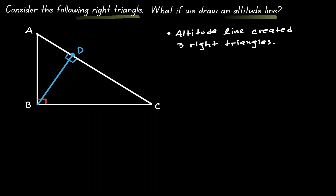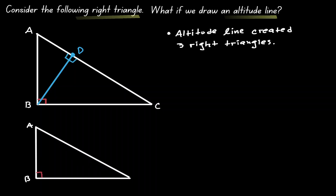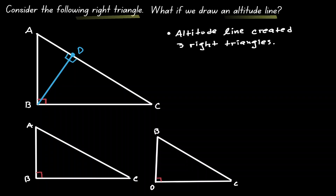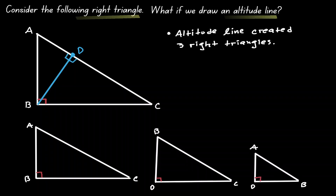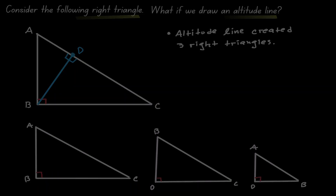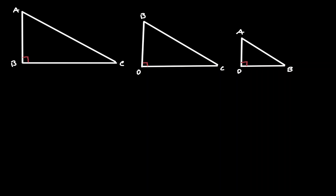Let's draw them separately at the bottom. Let's start with the biggest right triangle ABC. Then let's draw the next smallest right triangle BDC. And then let's draw the smallest right triangle ADB. Now, let's concentrate on the three right triangles that we have drawn. One thing that is special about these triangles is that they are similar right triangles: triangle ABC is similar to triangle BDC, which is also similar to triangle ADB.